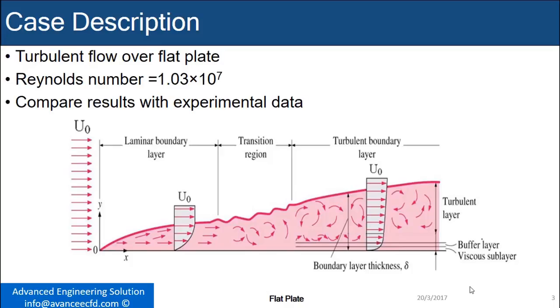In this tutorial, we choose turbulent flow over a flat plate. The Reynolds number is 1.03×10^7, selected from a NASA report on turbulent flow.